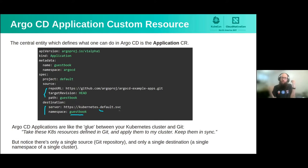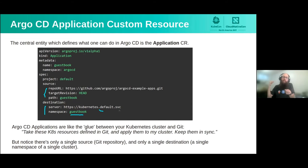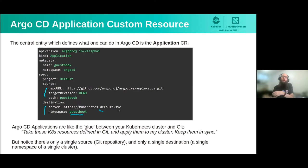Argo CD looks at your Git repository, looks at all the manifests there — whether it's simple YAML files or something like Helm or Kustomize — and applies them to the destination cluster. Once they're applied, it's up to Argo CD to keep those in sync. So as we saw with Shama's demo, if the Git repository changes, Argo CD makes sure that what's in Kubernetes is always consistent with what's in Git.